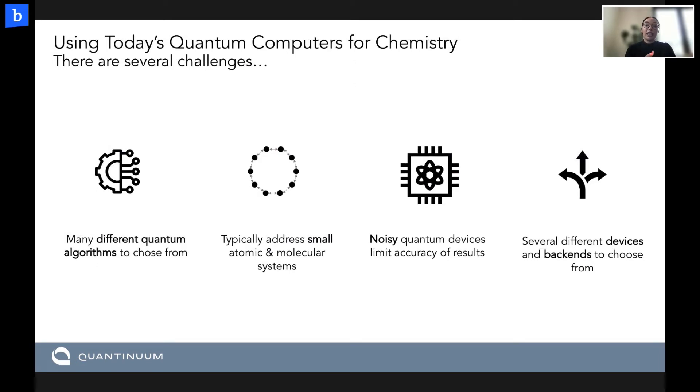However, using today's quantum computers for chemistry applications is really challenging for multiple reasons. Firstly, the field is advancing incredibly rapidly. So there are both numerous algorithms to choose from, as well as several different devices and backends which you can choose from as well. And trying to optimize that and test different algorithms can be really challenging if you have to rewrite your circuits every single time. Typically, we're also limited to calculating small atomic or molecular systems, which makes it really challenging when we want to look at systems of industrial relevance, which might be larger and more complicated. And it's also hard for us to get accurate results at all using today's noisy devices.